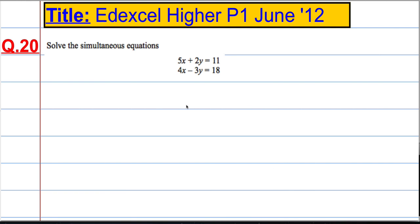Question 20 is a simultaneous equation question. The first thing I'm going to do is label this equation 1 and this is equation 2.